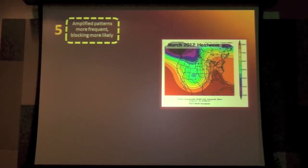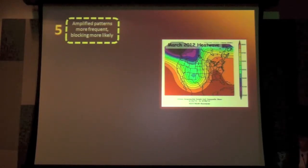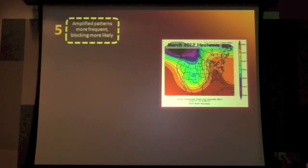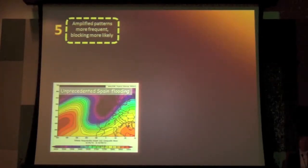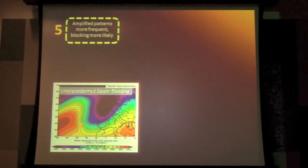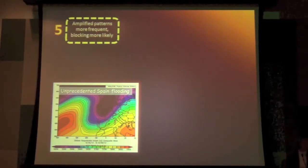This is the case of the heat wave in Vermont that I showed you earlier where we had this big dip over the west and a big northward swing over the east, letting all that tropical air extend all the way north. Here's another case for a flooding event in Spain. There's Spain right there. And you again see this big wave in the jet stream bringing a lot of moisture off the Atlantic into Spain.